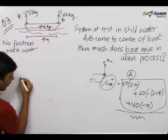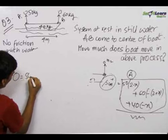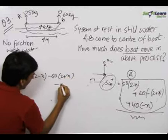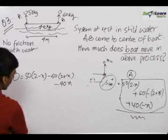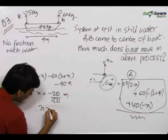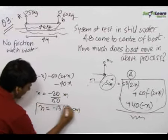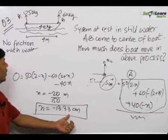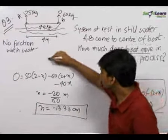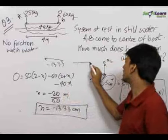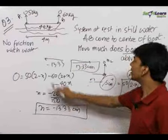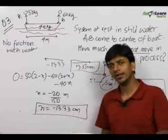Setting the numerator to 0: 0 = 50(2 − x) − 60(2 + x) − 40x. Solving this gives x = −20/150 meters, which equals −13.33 centimeters. The negative sign means the boat actually moves 13.33 cm in the right direction. So the final answer is that the displacement of the boat relative to the water is 13.33 centimeters to the right.